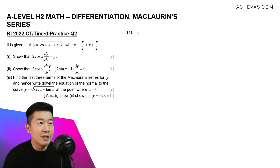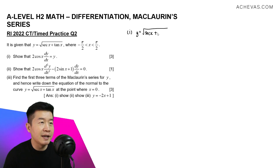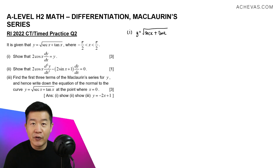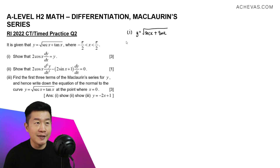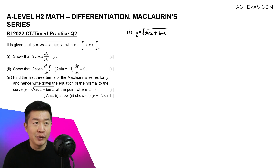In this question, we are given that y is equal to the square root of secant x plus tangent x. What I think we can do is to try to do a bit of manipulation and improvisation to what we have first before we start our differentiation.